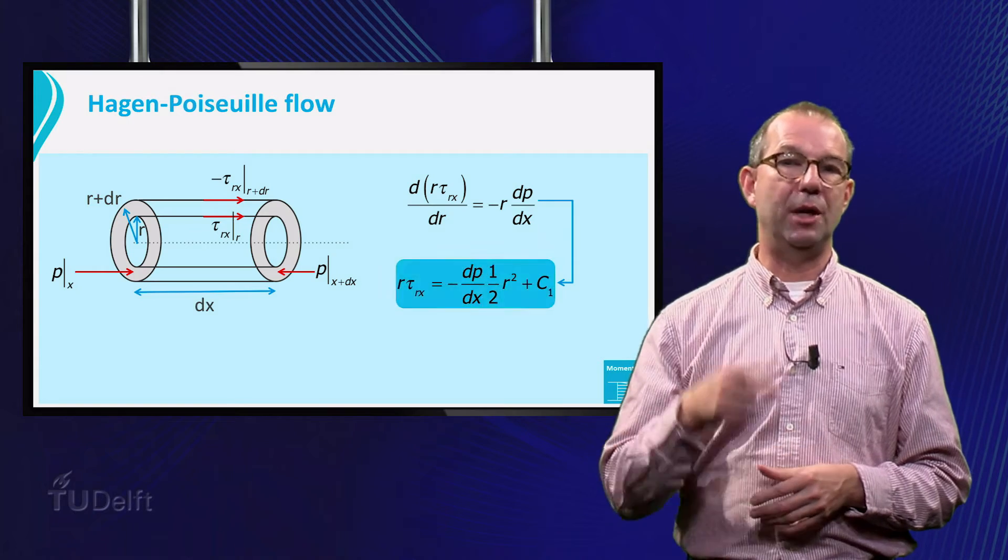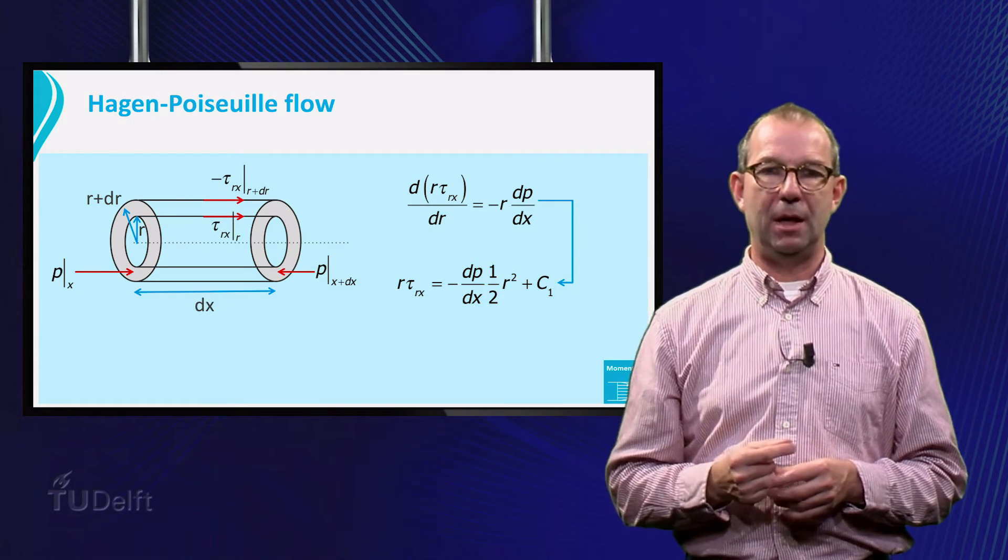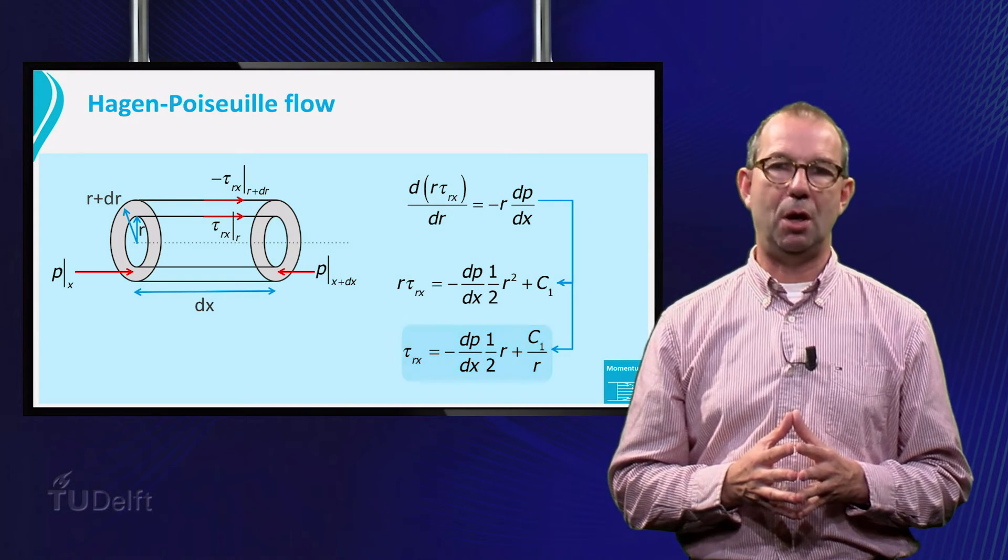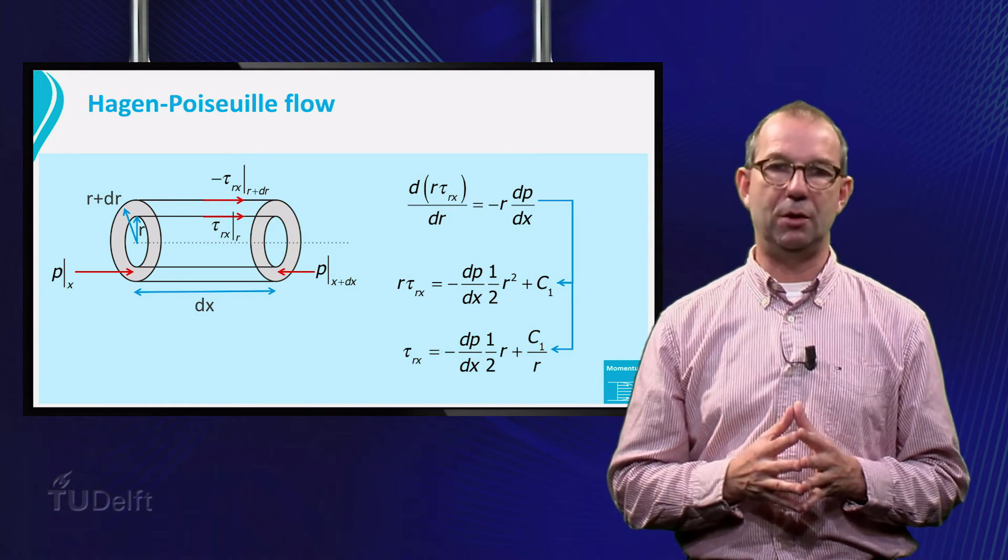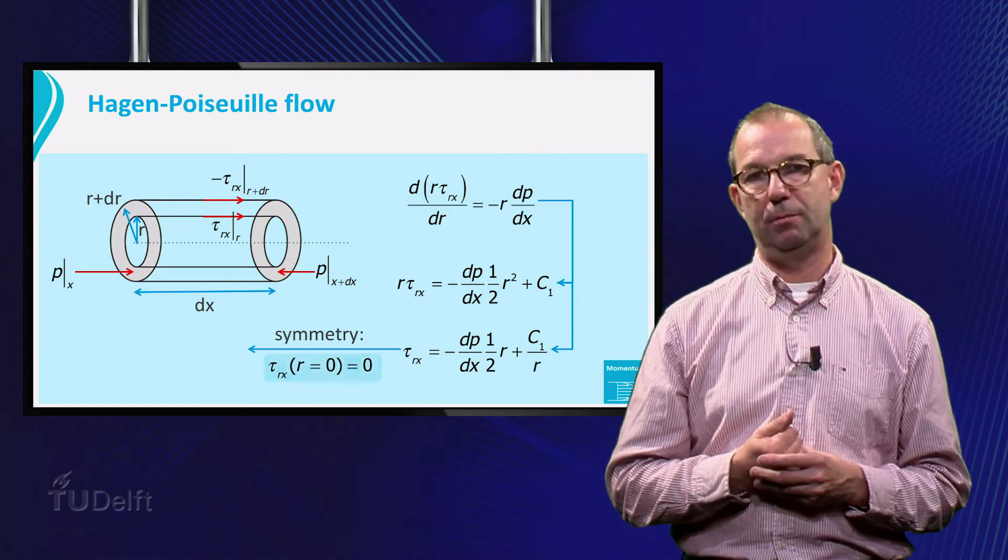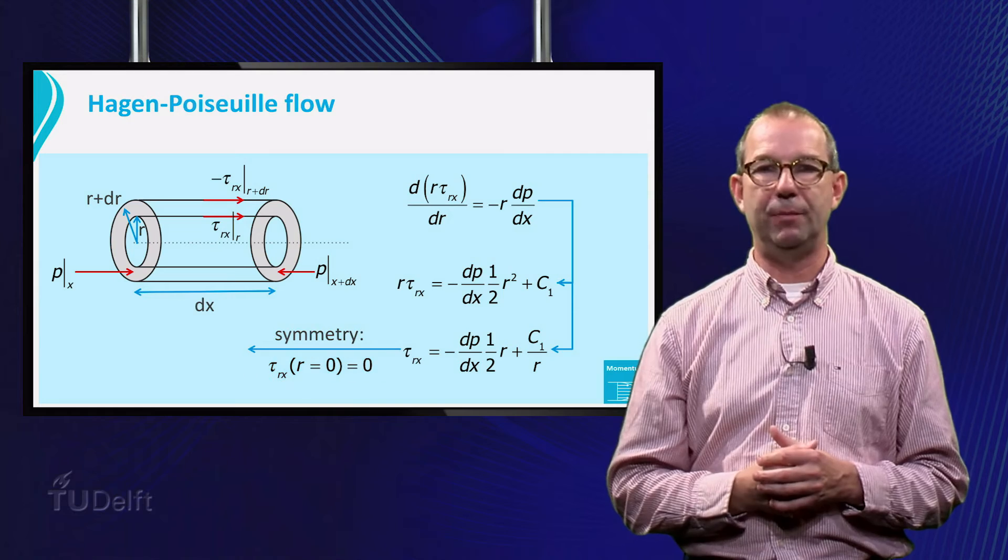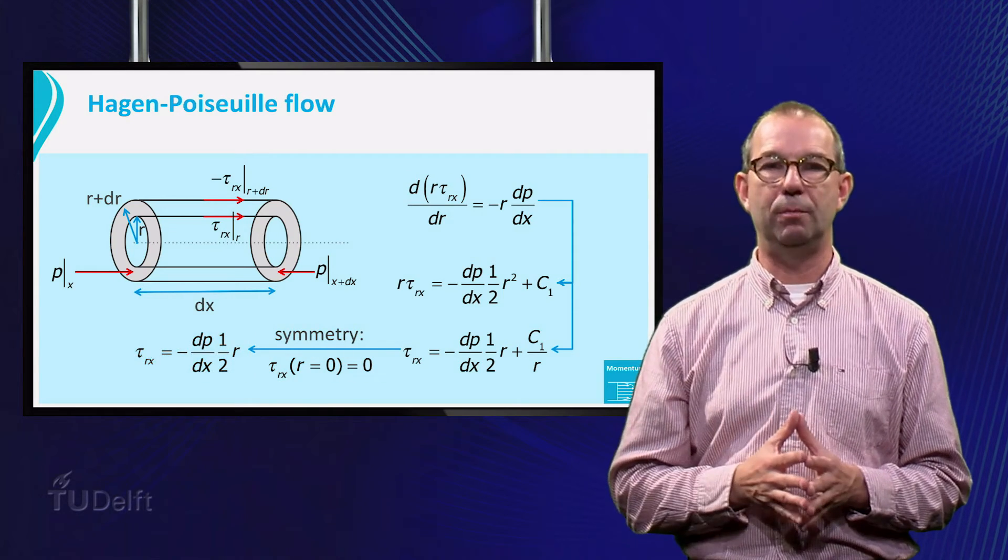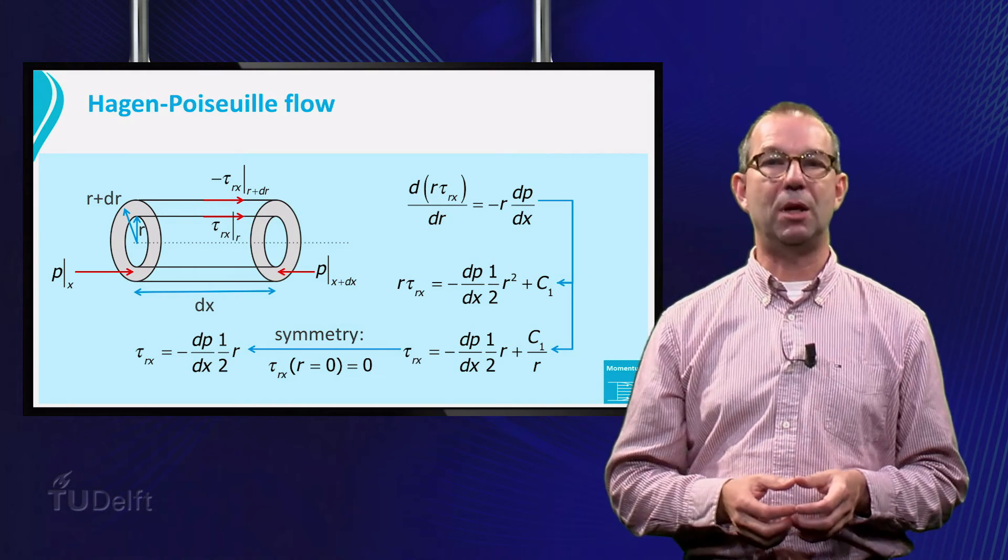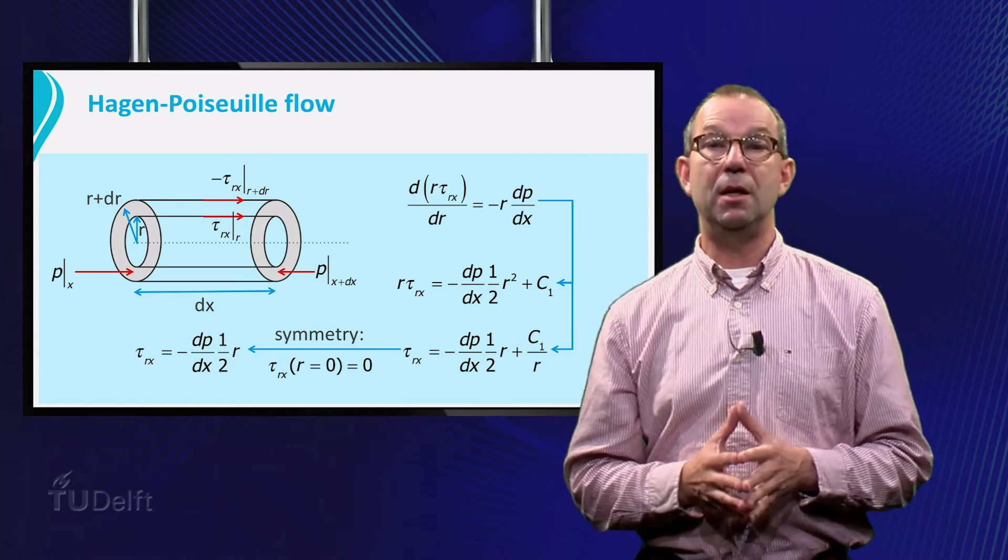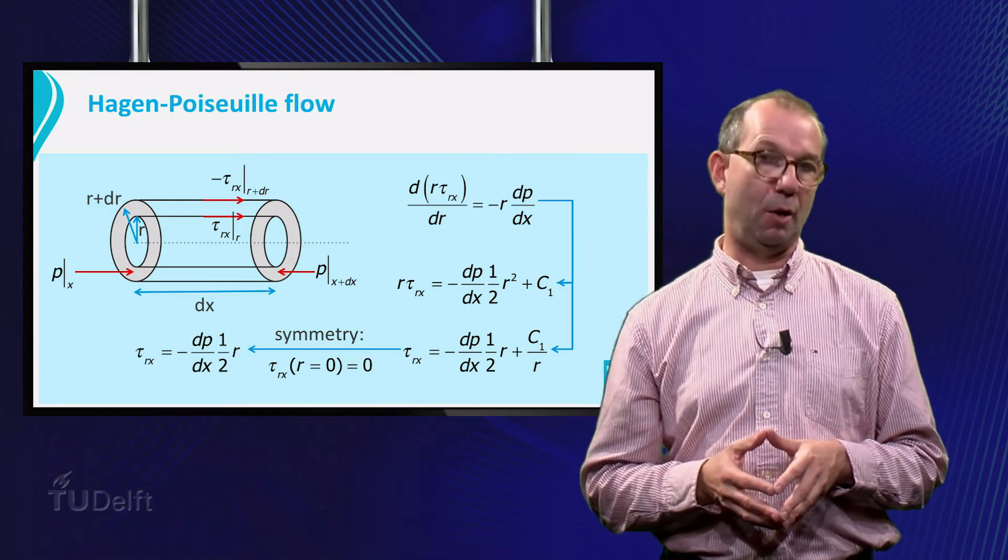We integrate this equation once, and simplify to get tau equals minus dp dx times half r plus c1 over r. The integration constant is zero. As like the previous example, this case has symmetry around r is zero. Thus, no momentum can flow through the x-axis. Hence the final solution is tau is minus dp dx times half r.